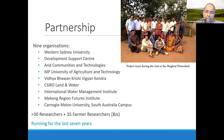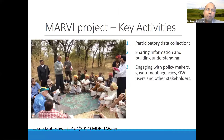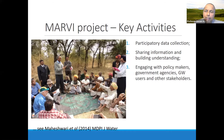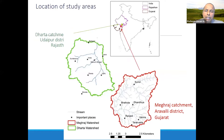We had a total of 30 researchers and 35 farmer researchers. The MARVI project had three key activities: participatory data collection, sharing information and building understanding, and engaging with policymakers, government agencies, groundwater users, and other stakeholders — a lot of working with people and learning together. The project was conducted in two states: Rajasthan, in Udaipur district, and Gujarat, in Rahul district. Both districts are semi-arid, and groundwater is a big issue in those areas.